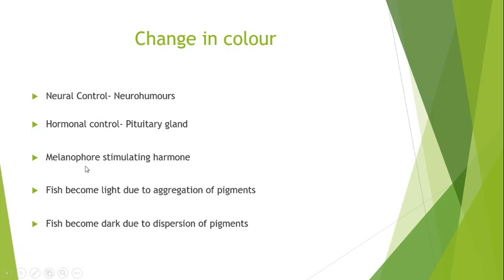Then hormonal control. The pituitary gland is mainly responsible for migration of pigment granules in chromatophores. It has been observed that the color of fish becomes light due to aggregation and dark due to the dispersion of pigments. A hormone called melanophore stimulating hormone, also known as intermedin, is secreted by the pars intermedia of the hypophysis.